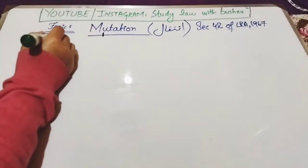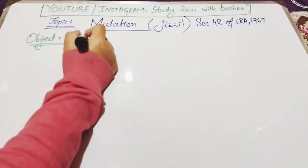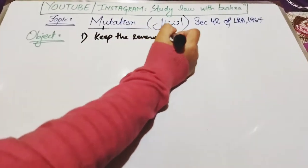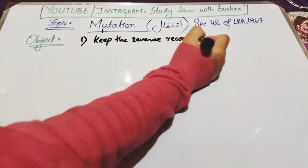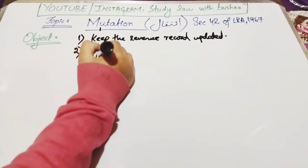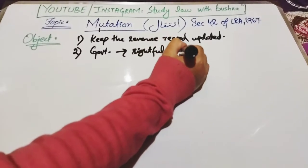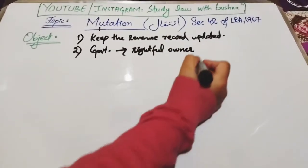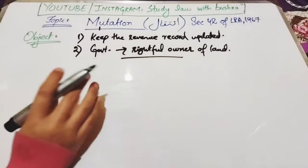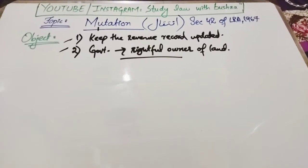The object of mutation — mutation ka maqsad kya hai? There are two basic objects. First, to keep the revenue record updated. Revenue record ko update karne ke liye mutation ki jaati hai. Second, the government must know about the rightful owner of the land so that land tax can be collected from the correct person. Government ko pata hona chahiye ke rightful owner kaun hai, jisse taxes ki collection ho sake.